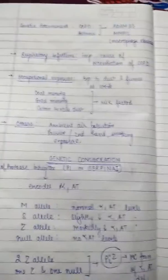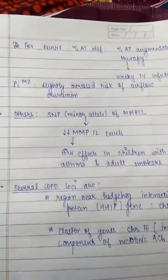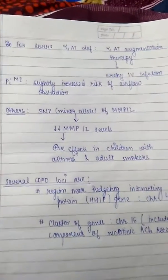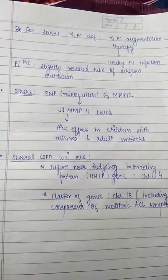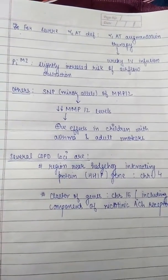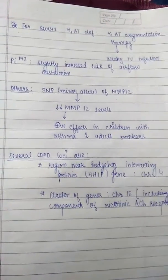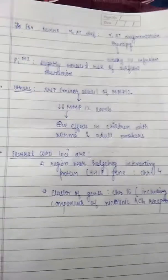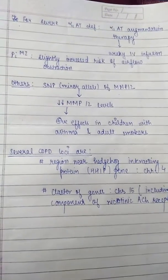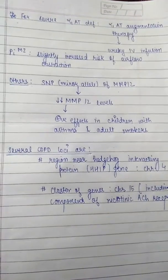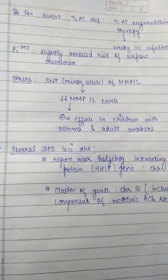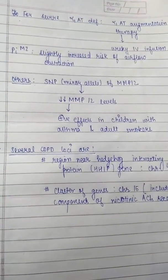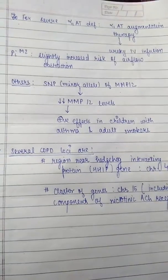If a patient has two Z alleles, or one Z and one null allele (PI Z), this is the most common form of alpha-1 antitrypsin deficiency. For severe alpha-1 antitrypsin deficiency, we have alpha-1 augmentation therapy — a weekly IV infusion is given. PI MZ confers a slightly increased risk of airflow obstruction.